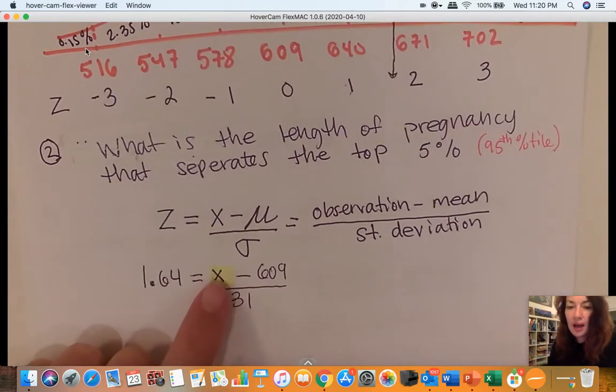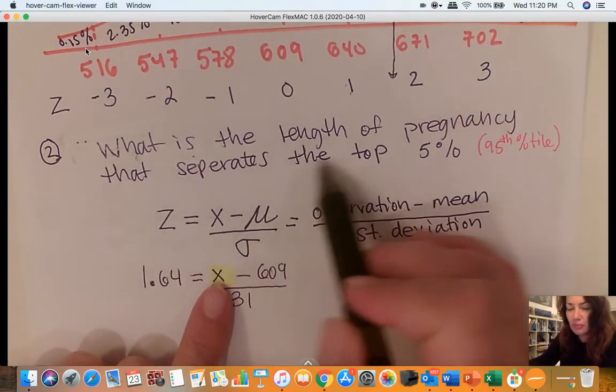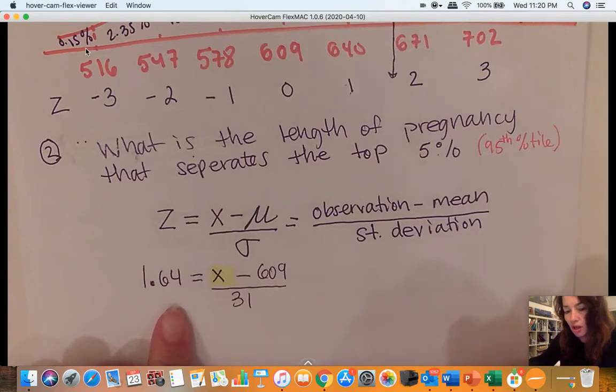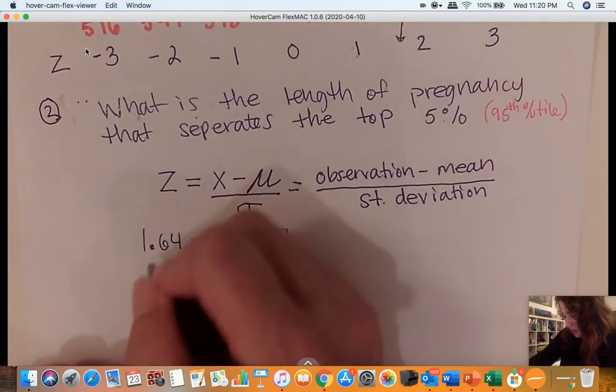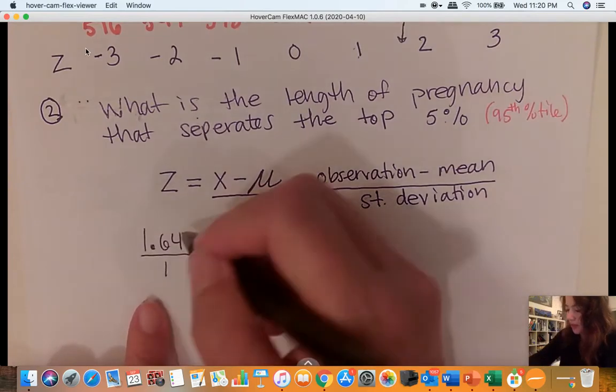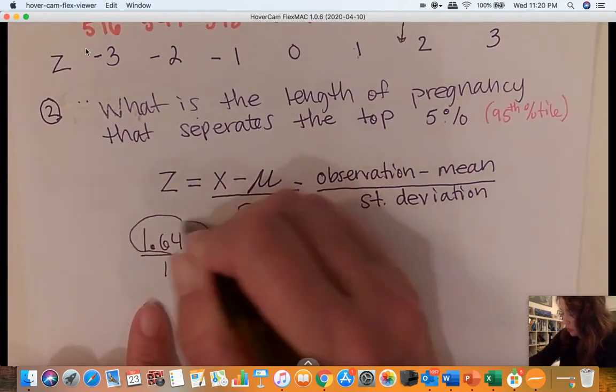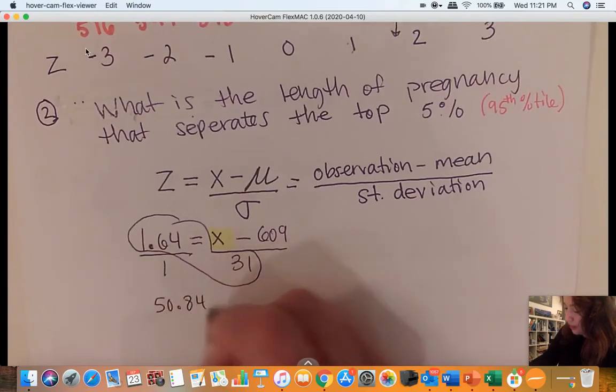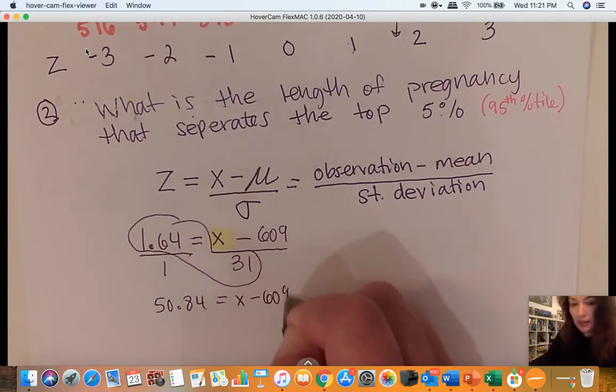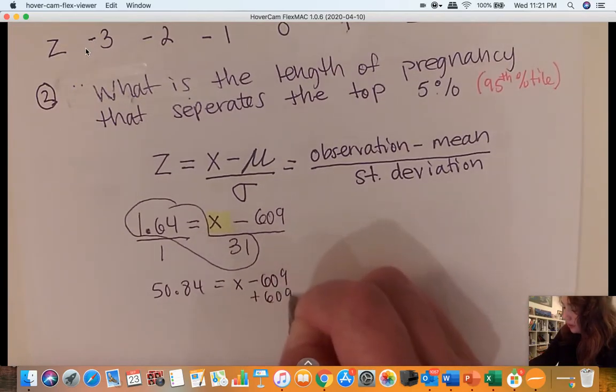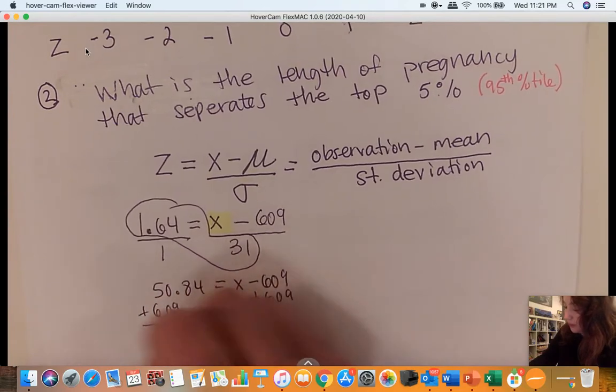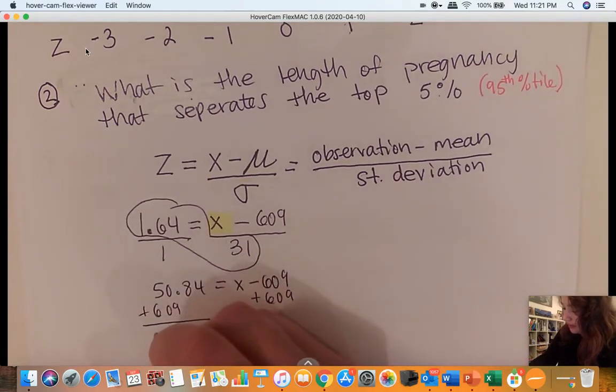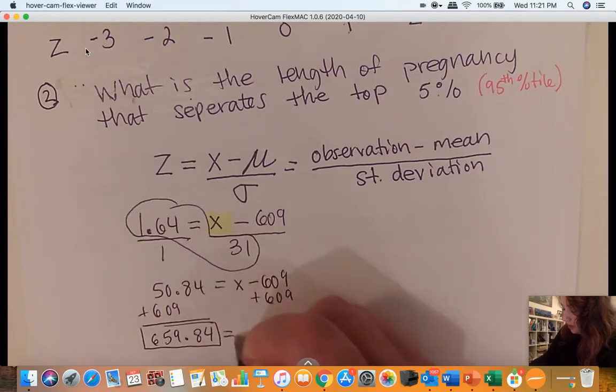So to find how many days, what is the length of pregnancy that separates the top 5%, you basically just need to solve for this equation. This is just a proportion. You can cross-multiply. So 1.64 times 31, using your calculator, is 50.84 equals x minus 609. I'm going to solve for x by adding 609 on both sides. We get 659.84.